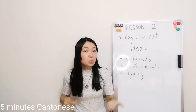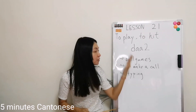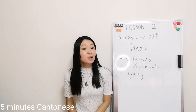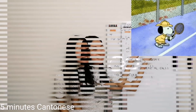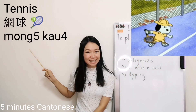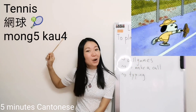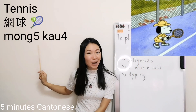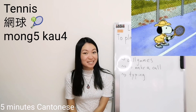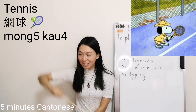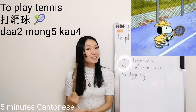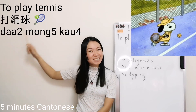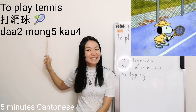In Cantonese, we use this action to describe the following activities. For example, ball games. You know how to play tennis? Yes, like this — to hit. So in Cantonese, to play tennis uses 打.